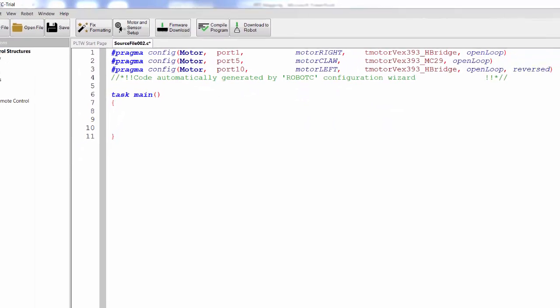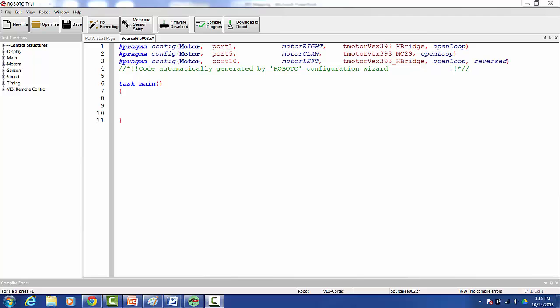Before we get going here, there are two important things to remember when programming the remote control. First, every remote control program will use the vexrt command to access the values of the joysticks and buttons. Second, all remote control commands for the robot must be placed within some type of while loop. In our case, we will place it within an infinite while loop.